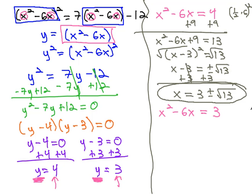Let's solve the other equation. Again, same idea, completing the square: half of 6 is 3, 3 squared is 9, so we'll add 9 to both sides, giving us x squared minus 6x plus 9 equals 12.